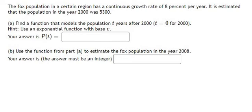Now I will show you how to answer. The fox population in a certain region has a continuous growth rate of 8% per year. It is estimated that the population in the year 2000 was 5300.